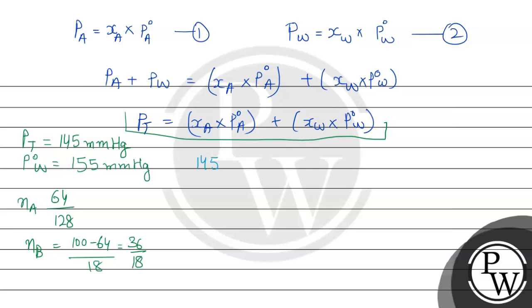P_total equals 145. We now substitute the mole fraction of A: mole fraction of A equals 64 divided by 128, all divided by (64/128 plus 36/18), which simplifies to 0.5 divided by (0.5 plus 2), giving us 0.5 divided by 2.5. This is multiplied by P0A, which we need to find.